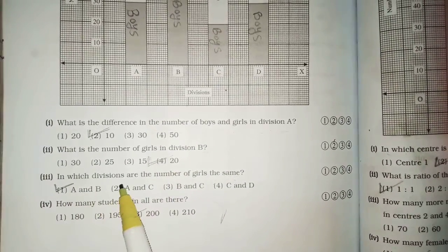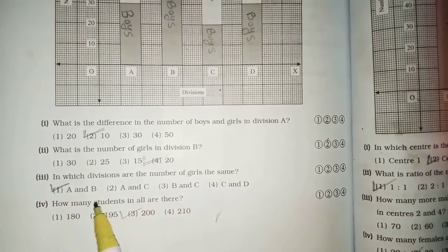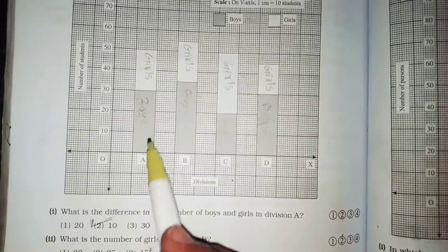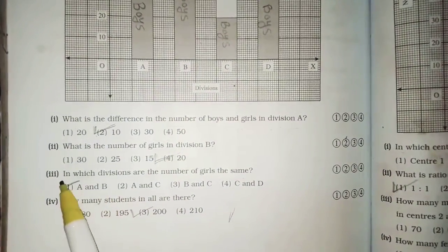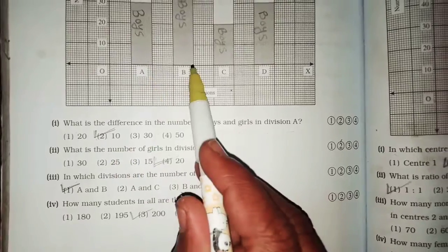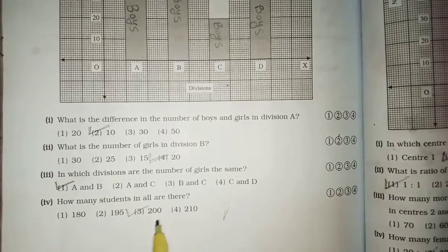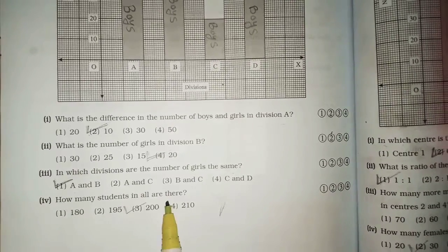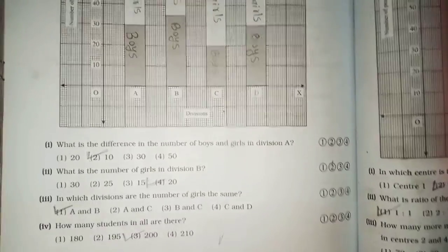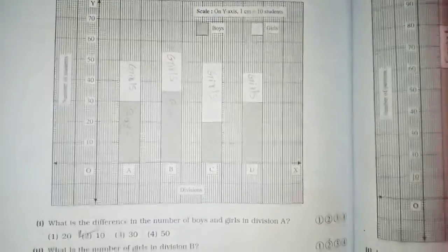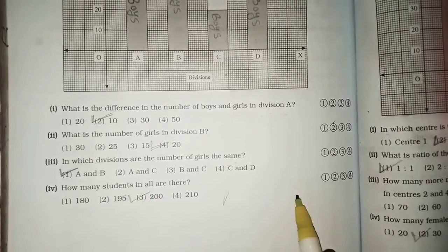In which divisions are the number of girls the same? Girls संख्या same कुठे कुठे आहे A and B में. A and B में. How many students in all are there? किती 200? A प्लाला सगराची बेरिज करा लिए ता किती आहे ना? 200.